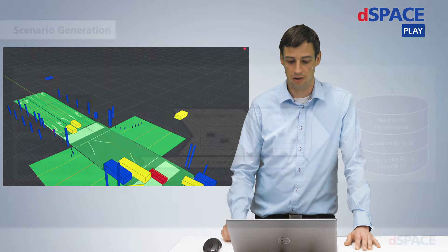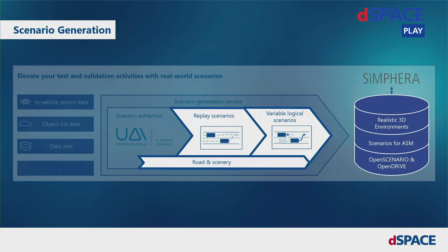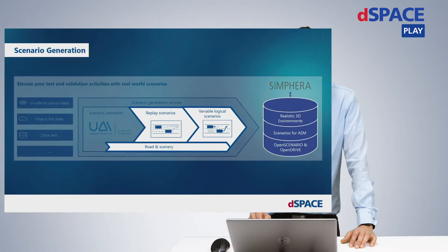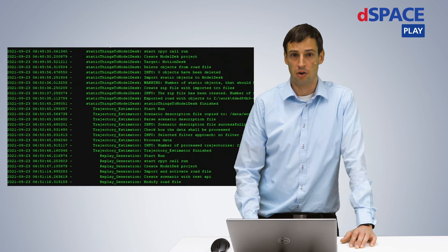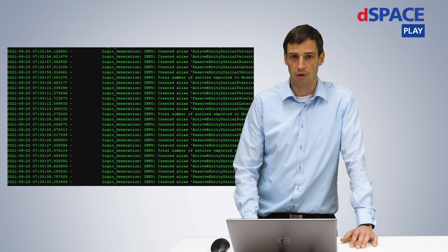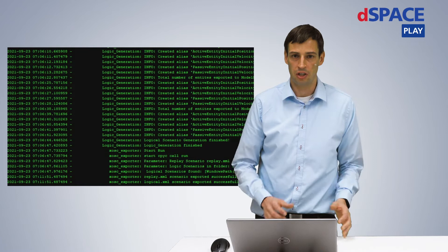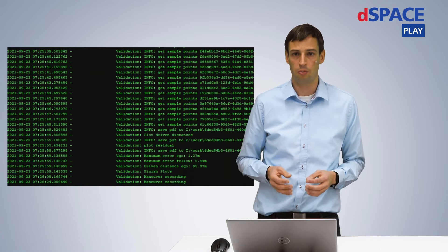Based on this abstract description of the road, trajectories, and positions of all traffic participants, we run an automated process to create replay scenarios, logical scenarios where you can easily vary your parameters, and a road description like OpenDrive. If required — for example, if you want to use physics-based sensor simulation — we can also create a 3D model of the scenery. The process is fully automated in a dockerized environment for scalability and cloud operation, generating all files required to import simulation scenarios into SimFera and creating OpenDrive and OpenScenario files.